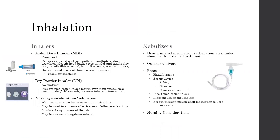For inhalers, the metered dose inhaler is a pre-mixed inhaler. To administer it: remove the cap, shake the inhaler, close your mouth on the mouthpiece, take a deep breath and exhale, tilt your head back, press the inhaler down, and inhale a slow deep breath over three to five seconds. Hold your breath for 10 seconds, then remove the inhaler. Direct it toward the back of the throat. Because this is difficult for many people, a spacer can be connected to the inhaler — you spray the medication in and inhale through the spacer's mouthpiece, which helps more medication reach the back of the throat.